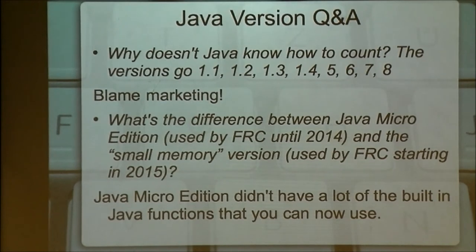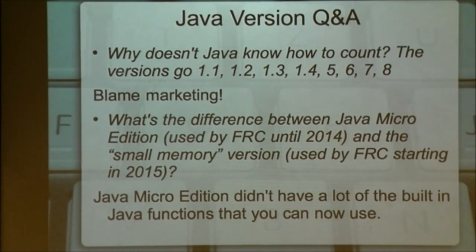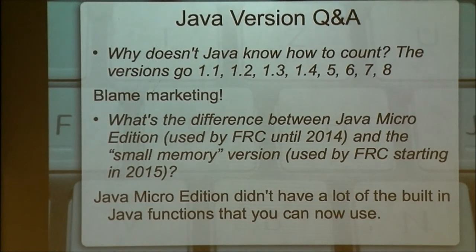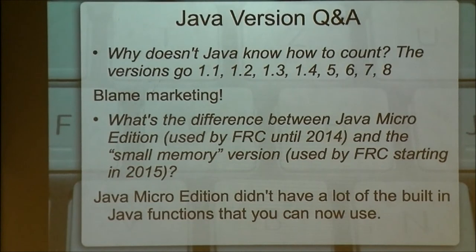This Q&A question came from a team member who was basically told that the versioning doesn't make sense. The way Java counts is 1.1, 1.2, 1.3, 1.4, then 5, 6, 7, 8. Somebody in marketing decided they didn't want to be on version 1 forever, so they just dropped the 1. But if you type java -version at the command line, it still tells you you're on 1.7 or 1.8 — so the 1 didn't actually go anywhere. This is a complete marketing thing — blame Oracle marketing, not the marketing people on your team.